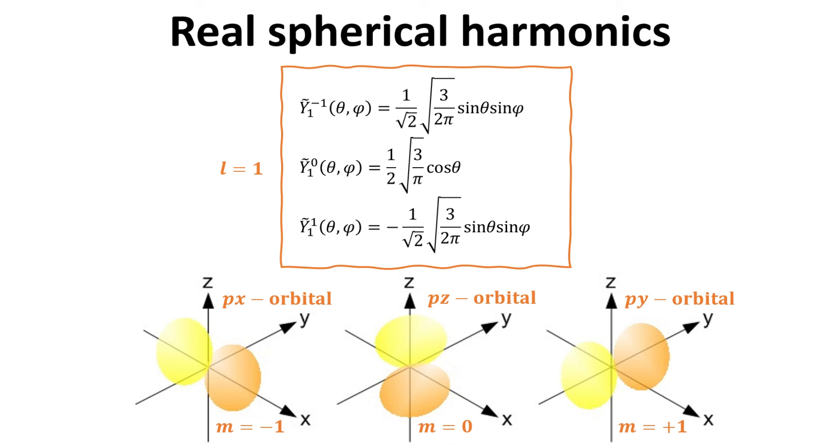For l equals 1, we have three spherical harmonics. m equals minus 1, 0 and plus 1. The absolute values of the y functions, when plotted as function of theta and phi, traced out a 3D surface which reveal a double lobe shapes as shown. The signs of the y function is denoted by the two colors. For m equals minus 1, 0 and plus 1, the lobes are pointing along x, z and y respectively. Hence, these spherical harmonics are often denoted as the px, pz, and py orbitals. The color denote the sign of the y function.